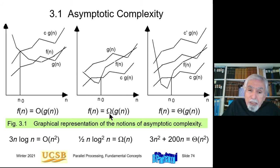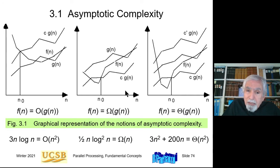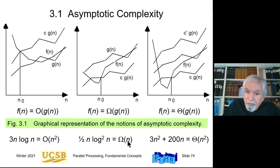We also have the corresponding lower bound notation: omega. We say f(n) is big omega of g(n) if eventually, beyond a certain point, f(n) grows faster than some constant times g(n). Constants are ignored, so the rate of growth of f(n) is greater than or equal to the rate of growth of g(n). For example, (1/2)n log²n is omega(n), meaning the rate of growth of n is a lower bound for the rate of growth of n log²n.